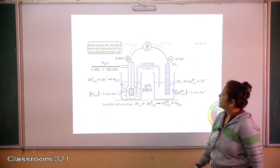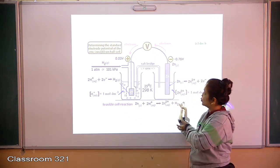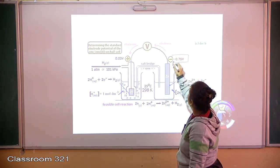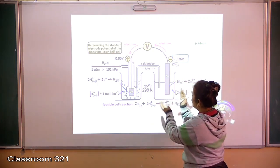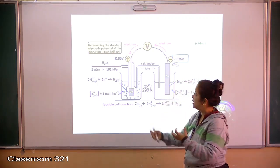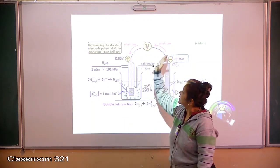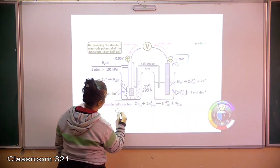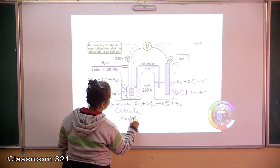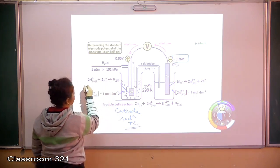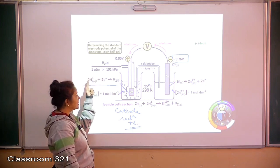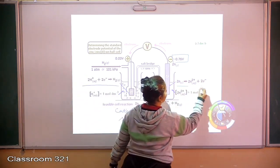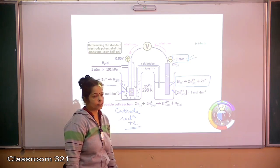Moving to the next example: the NHE is bound to the zinc electrode. The electrons are moving from the zinc towards the NHE, and the value obtained is negative. A negative value shows it is undergoing oxidation — zinc has a higher tendency of oxidation compared to hydrogen. Electrons move towards the NHE side, so the NHE acts as the cathode and undergoes reduction: H⁺ ions gain electrons to become H₂ gas. Zinc acts as the anode, and the values are obtained from voltmeter readings.